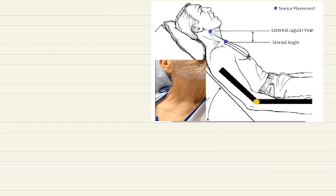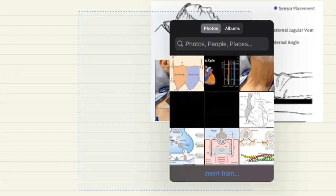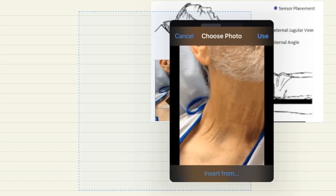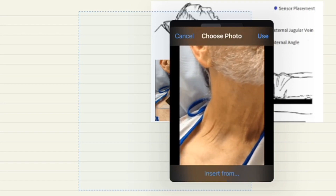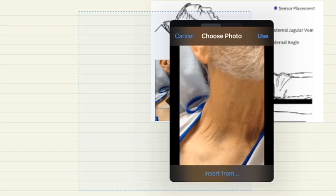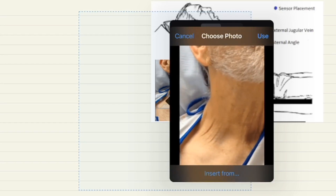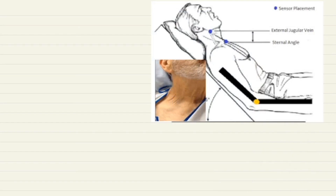Second important point: how to identify venous pulsations from arterial pulsations? Sometimes it may be difficult. How will you differentiate an arterial pulsation from a venous pulsation? When you see pulsations in the neck, how will you identify if it is arterial or venous? The first point to keep in mind is that venous pulsation is sinuous in nature — it has more than one wave. The JVP has not a single pulsation; it has more than one wave.